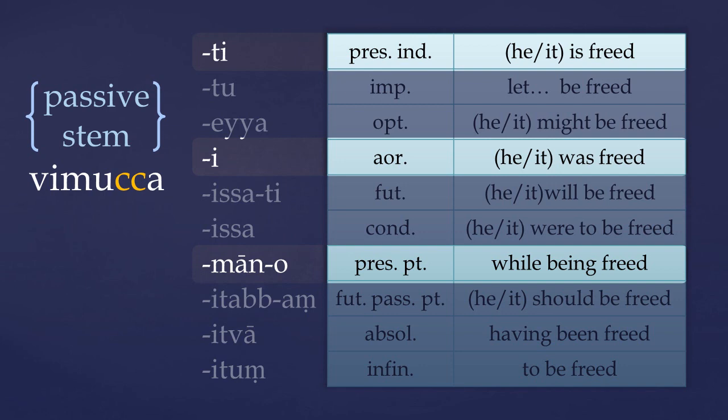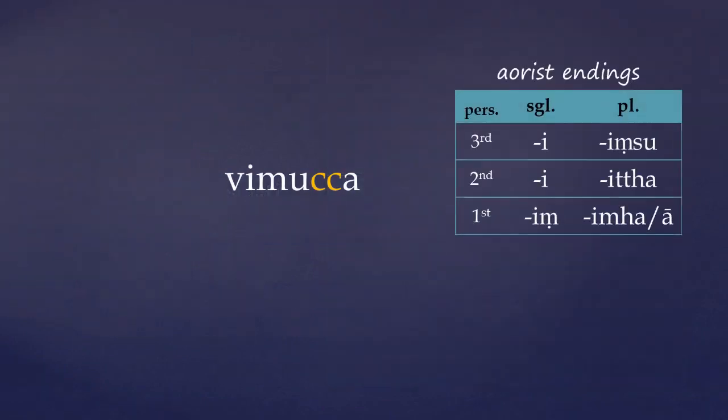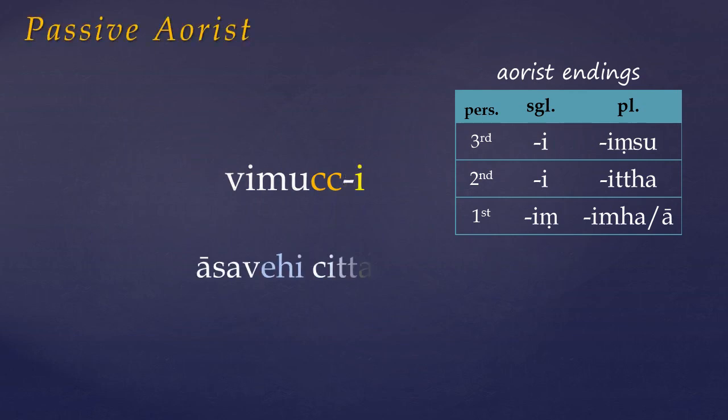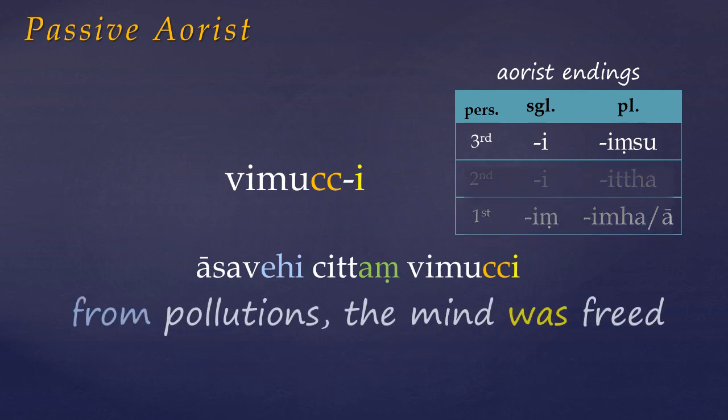To the passive stem, we can add the aorist endings that we saw way back in lesson four, and this creates the simple past tense of the passive, which is almost always just found in the third person. For example: 'From pollutions, the mind was freed.' Here the -āhi ending looks like an instrumental, but it's actually an ablative, which gives a sense of separation. In English we'd normally render this with the preposition 'from'.